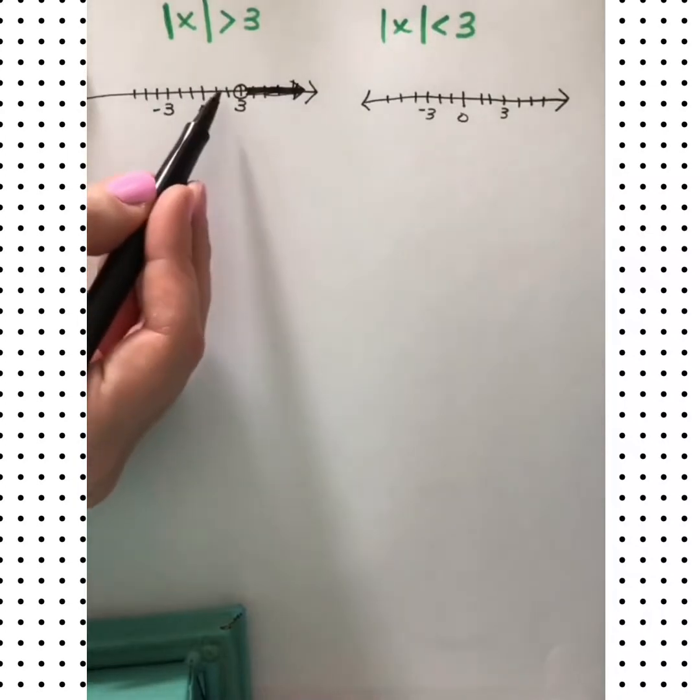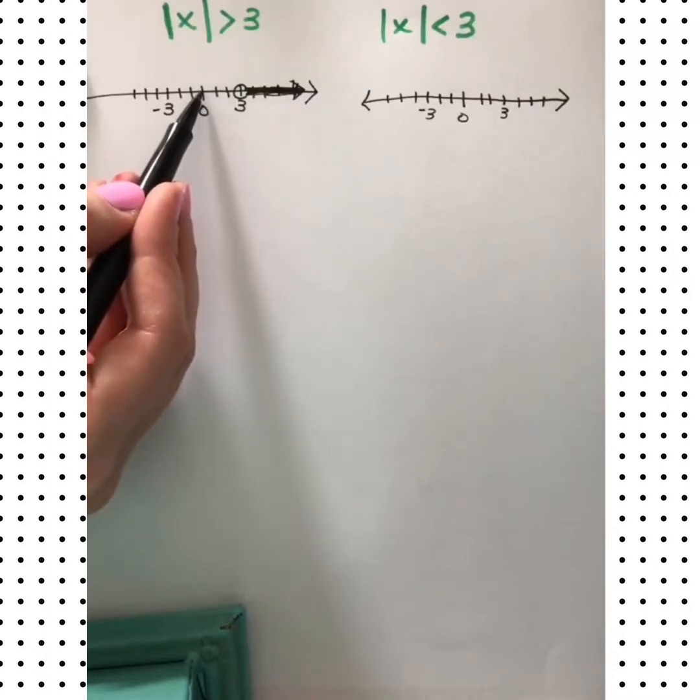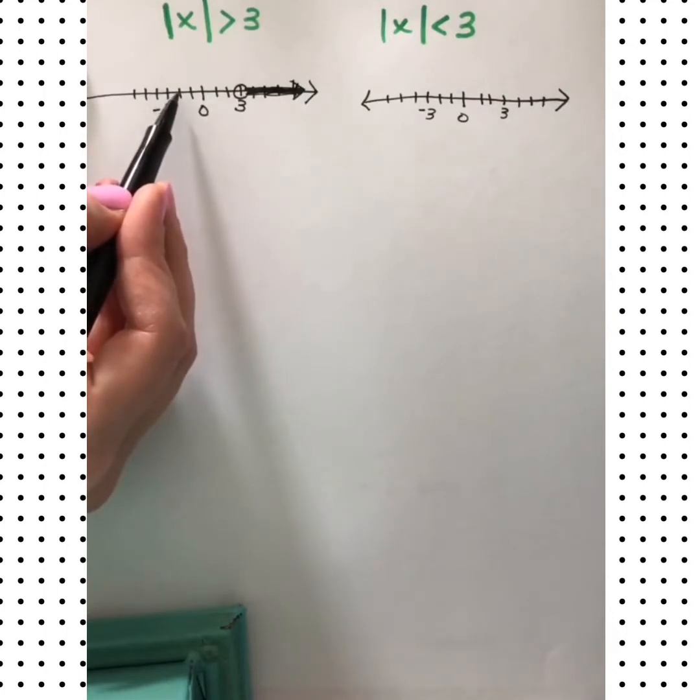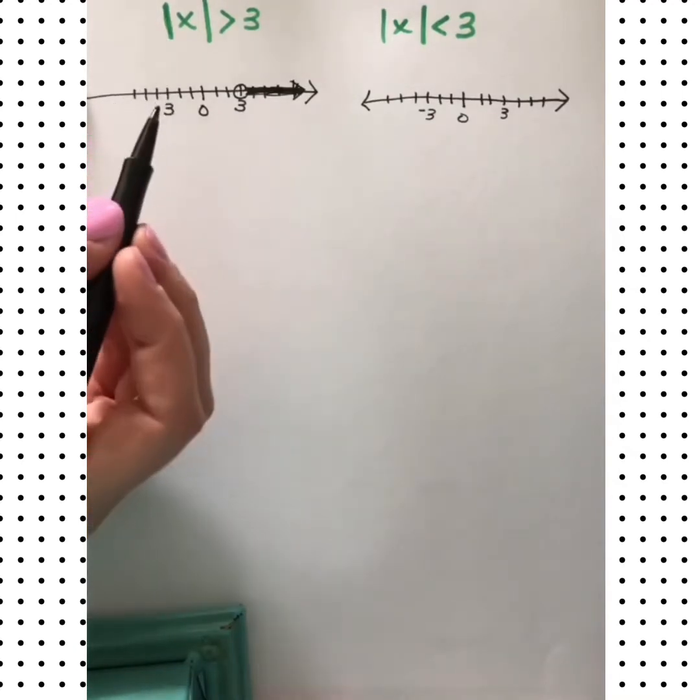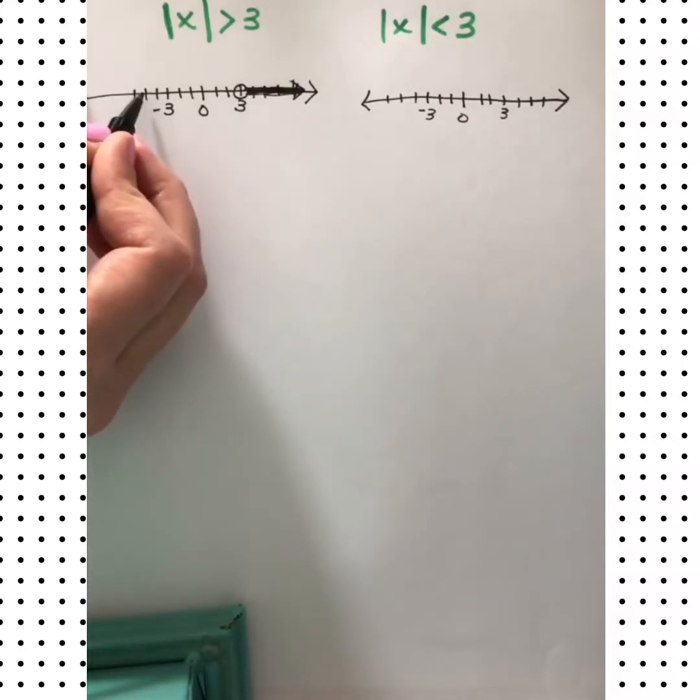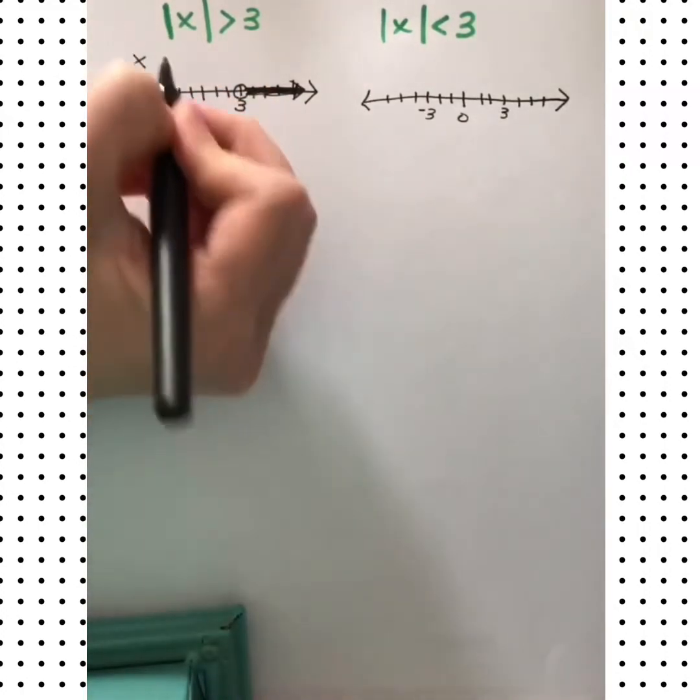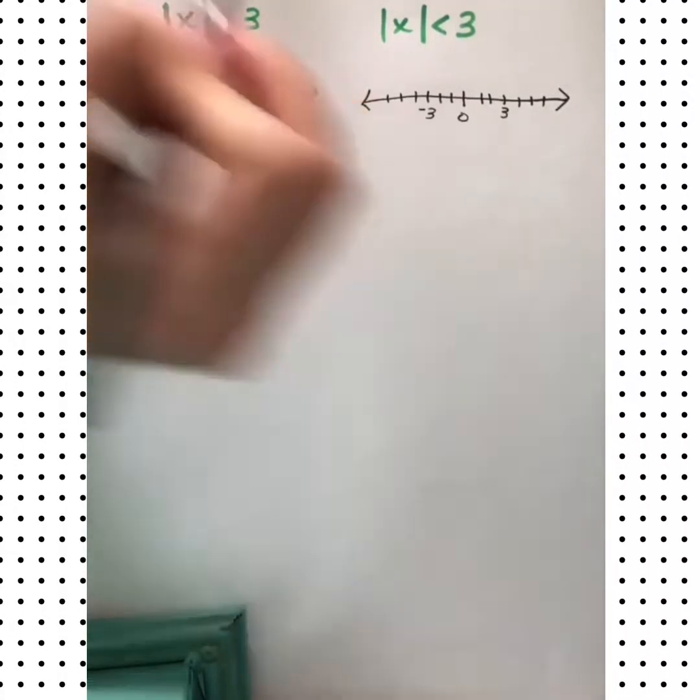But let's try some numbers down here. Will 2 work in here? The absolute value of 2, is that greater than 3? No. How about 0? Nope. How about negative 2? Nope. How about negative 4? The absolute value of negative 4 is 4, and that is greater than 3. How about negative 5? Yep. So all these numbers down here also are solutions to this inequality. So you can see here the solutions happen when x is greater than 3 or when x is less than negative 3.